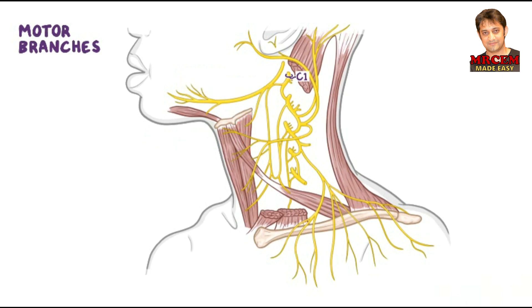Another motor nerve which derives from the C1 fibers that travel with the hypoglossal nerve is the nerve to the geniohyoid, which innervates the geniohyoid muscle.